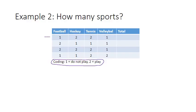So for the first person, it turns out doesn't play football, does play hockey, does play tennis, does not play volleyball, so in total this person plays two sports. The next person actually does play football, does not play hockey, does not play tennis, does not play volleyball, so only plays one.